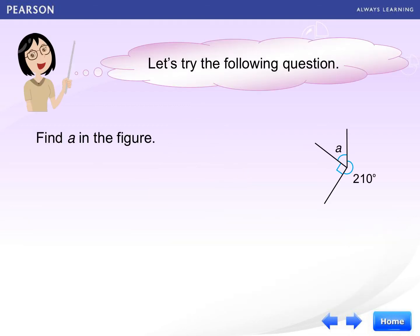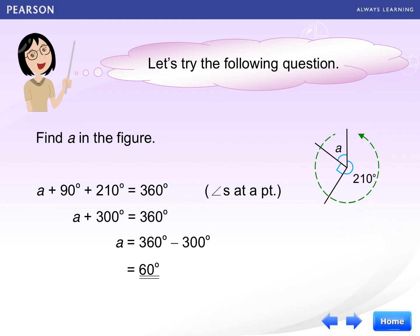Let's try to solve for A for the following question. A plus 90 degrees plus 210 degrees equals 360 degrees. The reason for this is angles at a point. Then we can find out that A equals 60 degrees in this case.